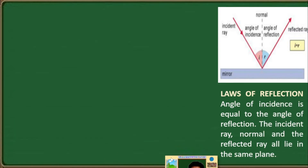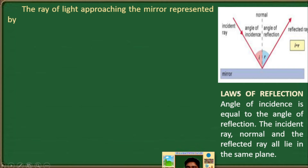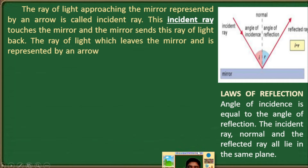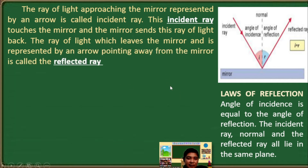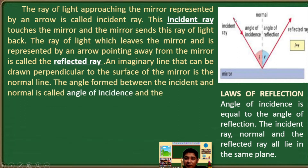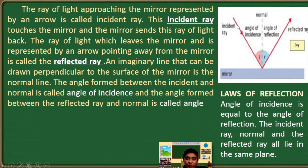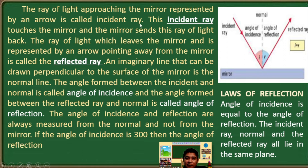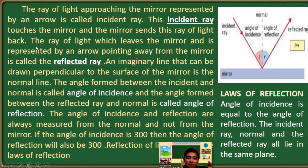Let us now proceed to the law of reflection. The laws of reflection state: the angle of incidence is equal to the angle of reflection; the incident ray, the normal, and the reflected ray all lie in the same plane. The ray of light approaching the mirror, represented by an arrow, is called the incident ray — it is a ray of light originated from the source of light. This incident ray touches the mirror, and the mirror sends this ray of light back — this is now the reflected ray.